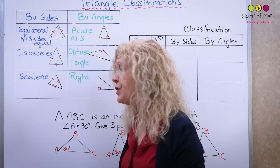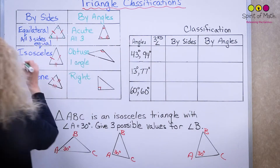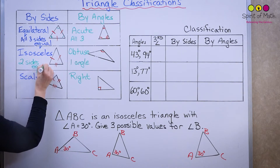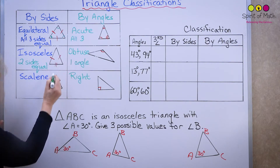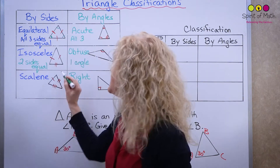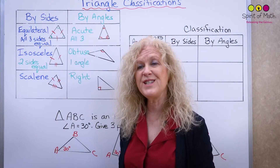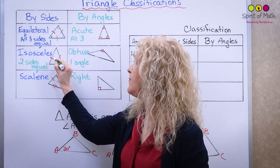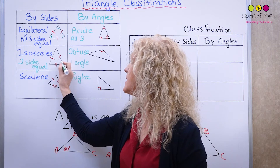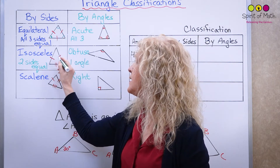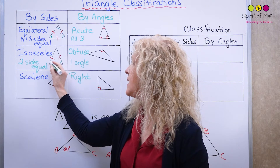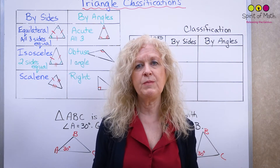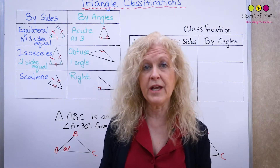Isosceles triangle: two sides are equal. I've got a tick on two sides to show they're equal, but the third side is different. Because a side affects its opposite angle, these two equal sides affect their opposite angles — so those two angles will also be the same, since their opposite sides are the same length.